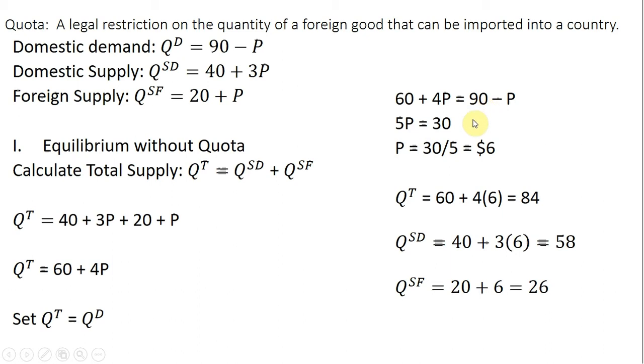And just start collecting some terms. So minus 60 from both sides gives us 90 minus 60 or 30. Adding P to both sides, 4P plus P gives us 5P. And then solving for P, we'll have a price of $6 in the domestic economy, $6 per unit.